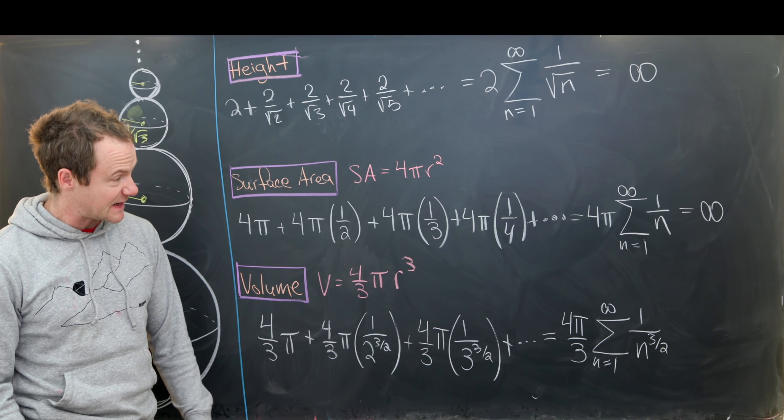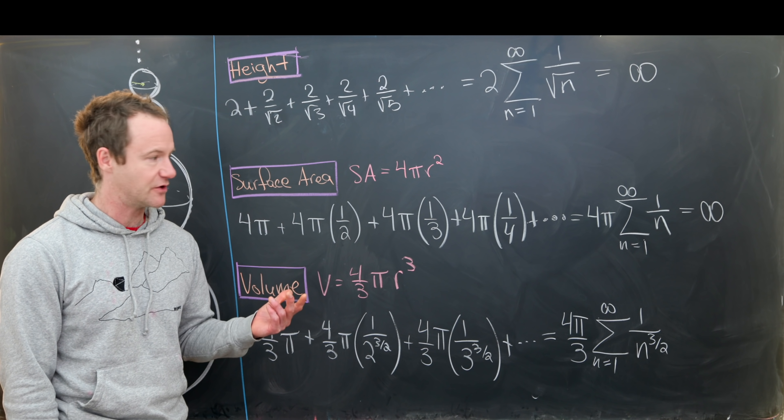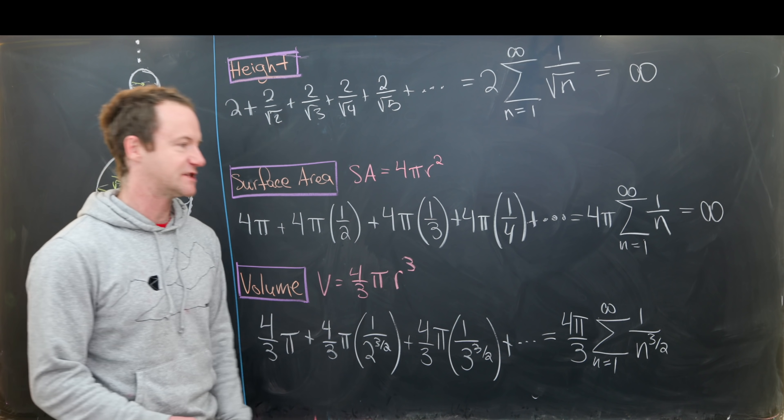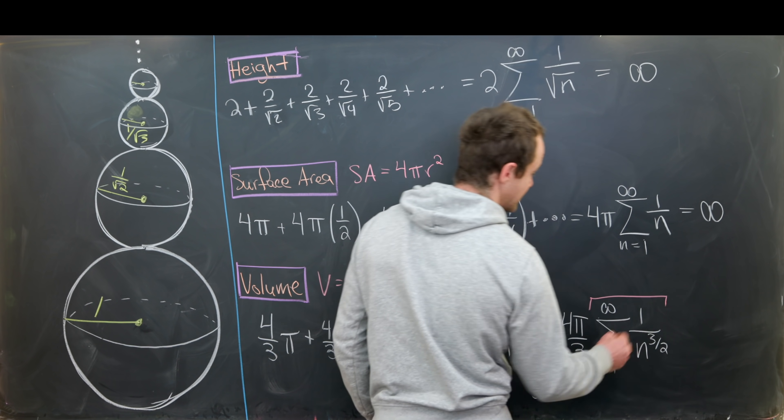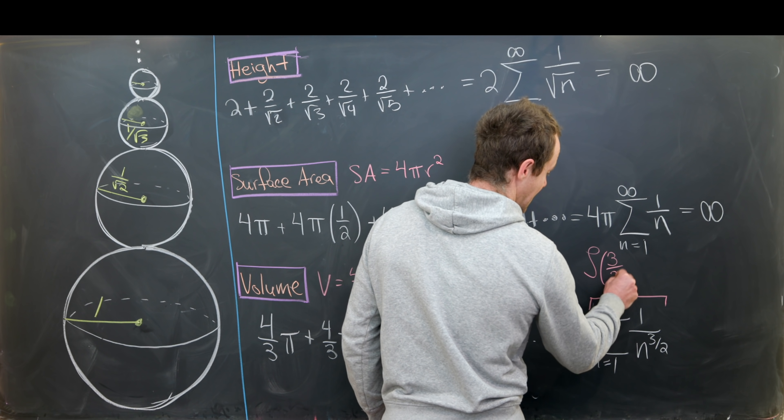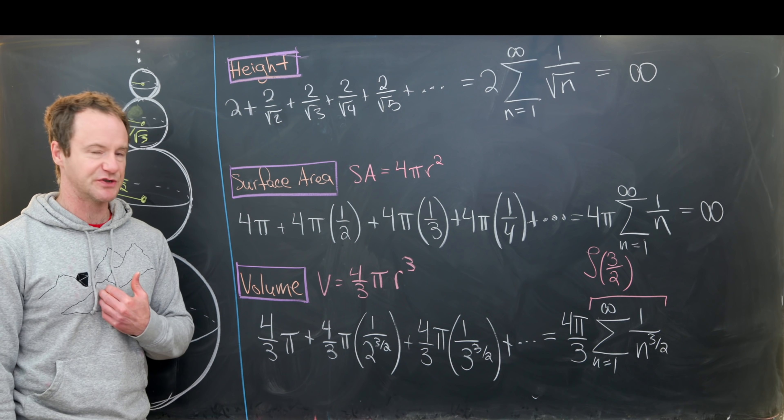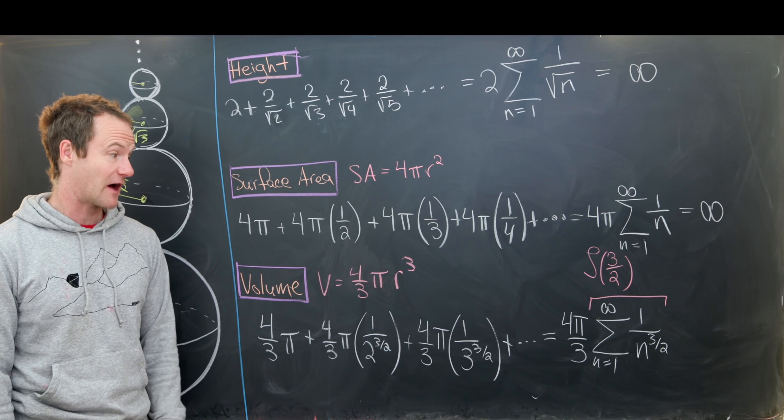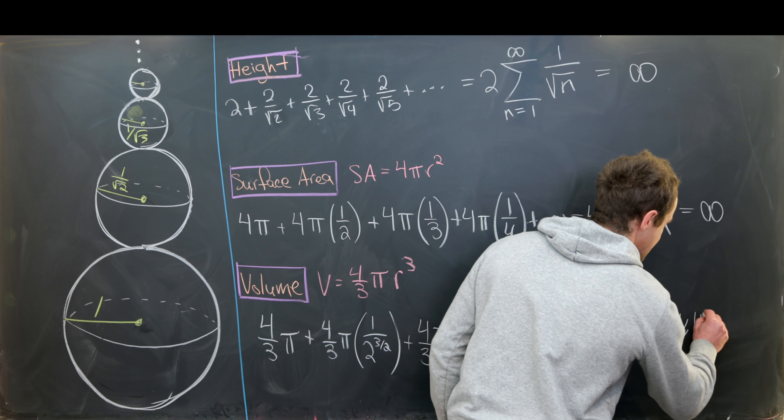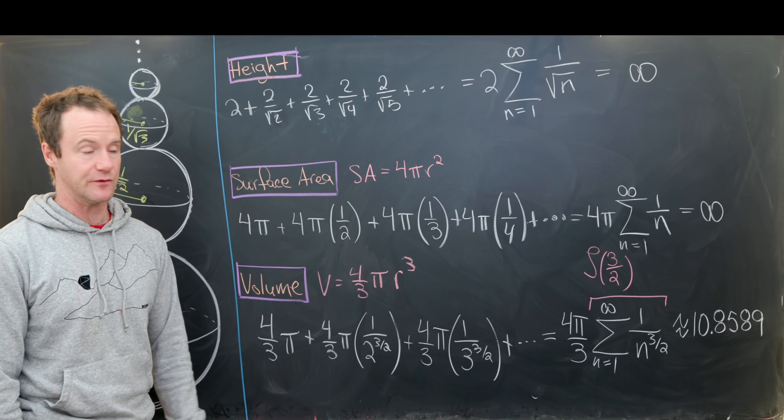And now by something called the p test, this thing actually converges. And since it converges, this has a value of less than infinity. You might say, can we find a nice value for this sum? Well, in fact, there's no real nice way to write this down without using something called the Riemann zeta function. Maybe the best way to do this would be to take this sum and rewrite it as zeta three halves. That being said, we can do an approximation. And I did this approximation by taking the first 10,000 terms from this sum in a computer, and I got that this was approximately equal to 10.8589.